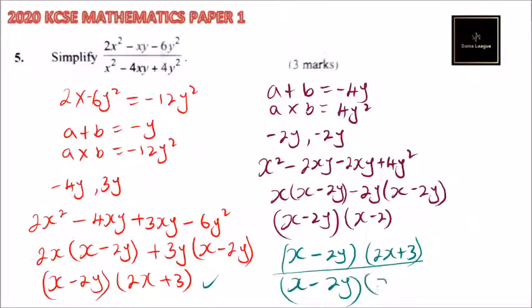So with that, we can now simplify and divide that by that. What you will be left with here is 2x plus 3y divided by x minus 2y.